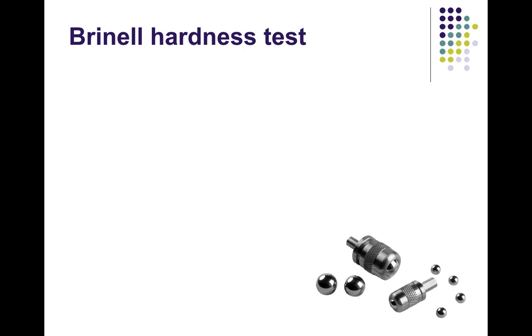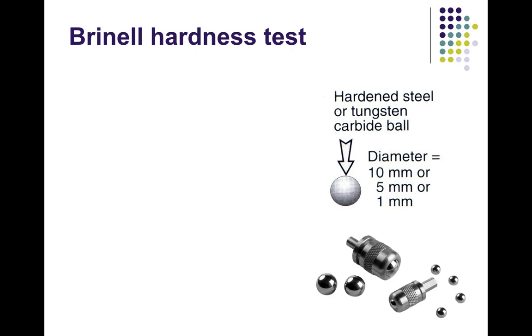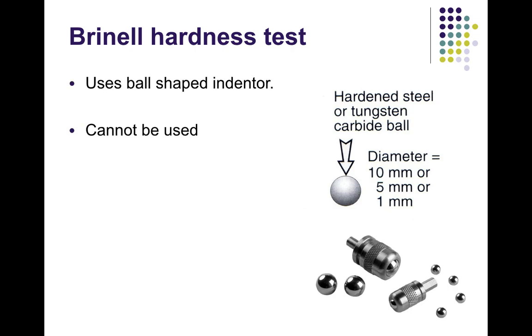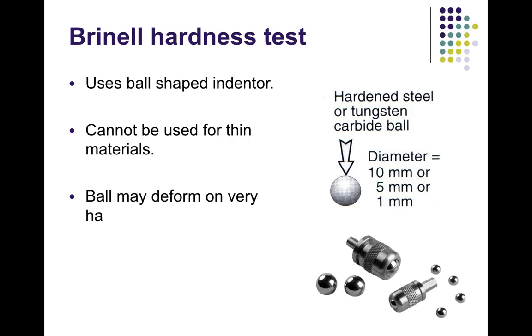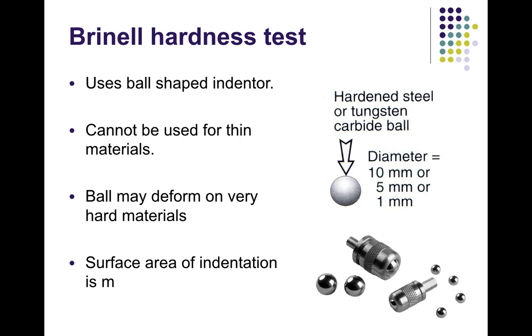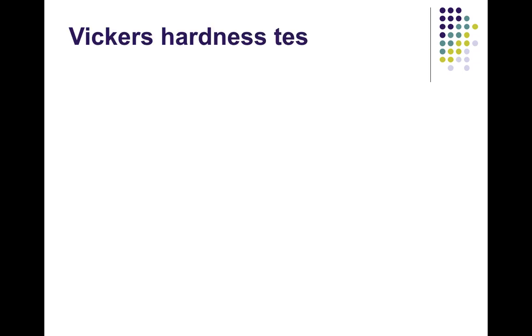The Brinell hardness test uses a hardened steel or tungsten carbide ball with a diameter of 10 mm, 5 mm, or 1 mm. That ball is used as the indenter to give a dent. This test does not apply to thin materials, as the ball may deform on very hard material. In this case, hardness is measured by measuring the surface area of the indentation made by the Brinell ball.